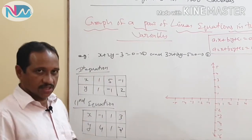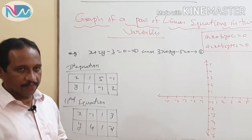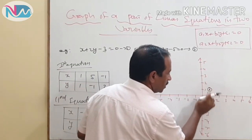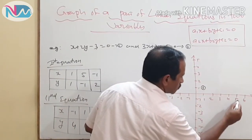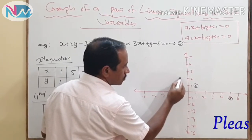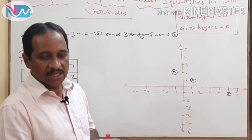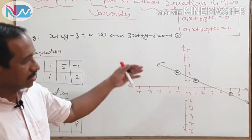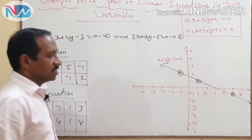To draw the graph of the first equation, we take the values of x and y as coordinates of points and plot them on a graph paper. The points are (1, 1), (5, minus 1), and (minus 1, 2). Note that this is not a graph paper, so I may not get exactly the straight line, but when you use a graph paper you will definitely get the straight line. Joining these points approximately gives the graphical representation of the first equation: x plus 2y minus 3 equals 0.